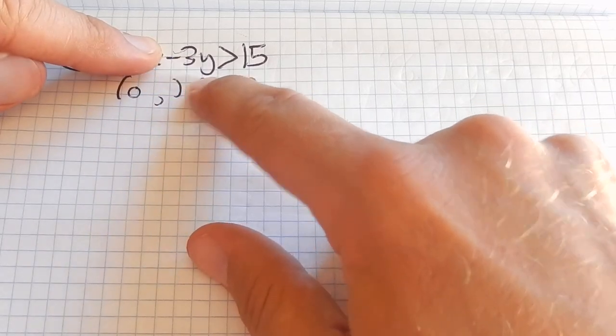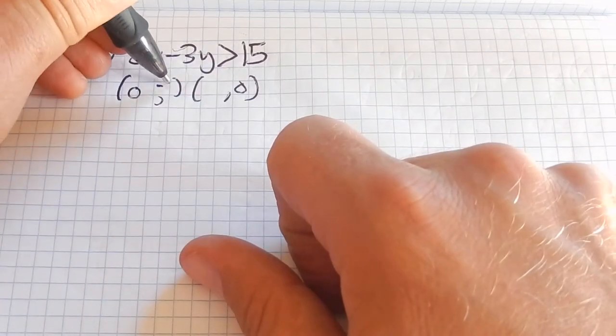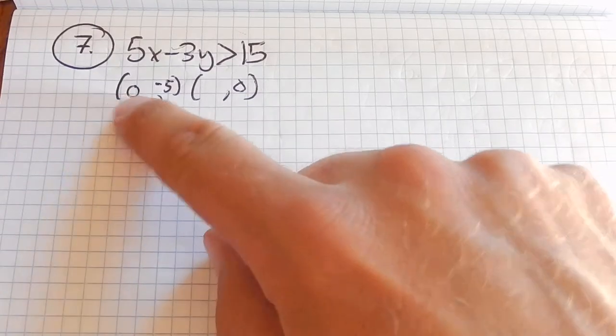So negative 3 times negative 5 is 15. So I know my boundary is going to go through that point, (0, negative 5).